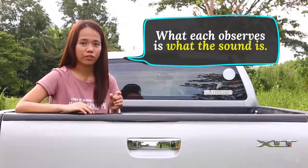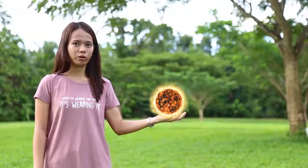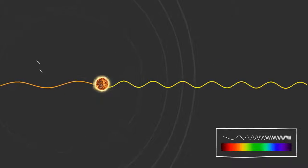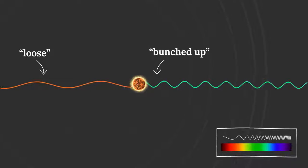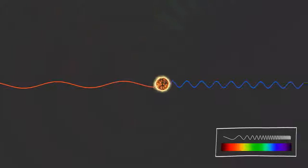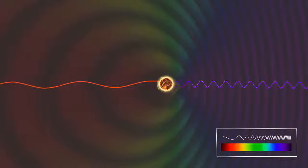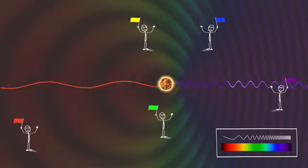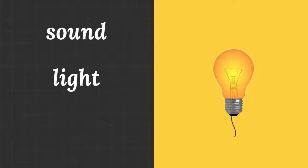What each observes is what the sound is. Similarly, if I throw this ball close to the speed of light, its light waves would also get loosened and bunched up, making it appear as different colors. With infinitely many observers, the ball would appear to be all colors at the same time, each color relative to one observer. So, sound and light are relative.